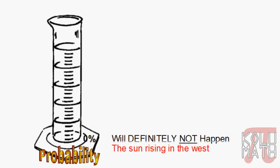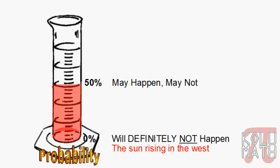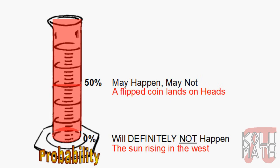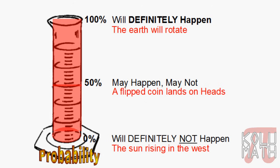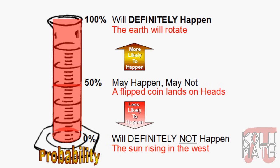If we go up the scale a little further, we get halfway up to about 50%. A 50% chance means it may happen, may not — it has the exact same likelihood of happening as not happening. For example, if we flip a coin and land on heads, that's 50-50: it happens half the time. And if we continue up to 100% probability, that's something that will definitely happen — absolutely certain. You can think of something like the Earth will rotate, because every day the Earth is going to continue to rotate. As you go from 50 to 100%, it gets more and more likely to happen; from 50% down to 0%, less and less likely.